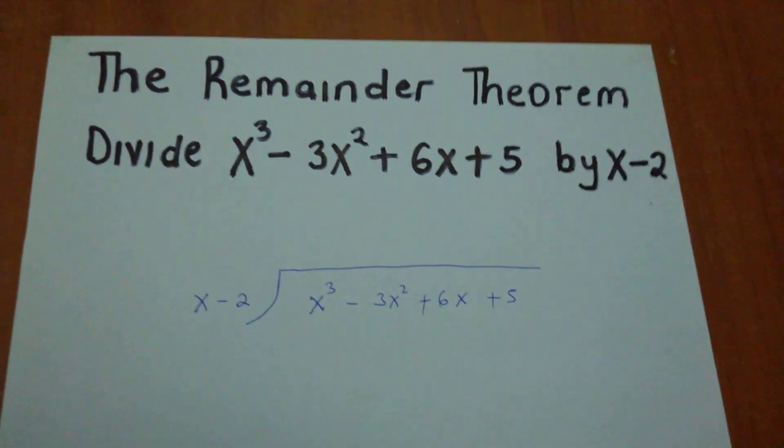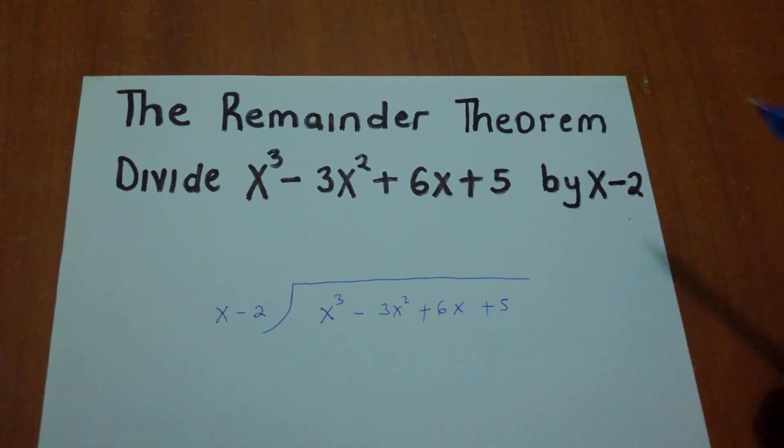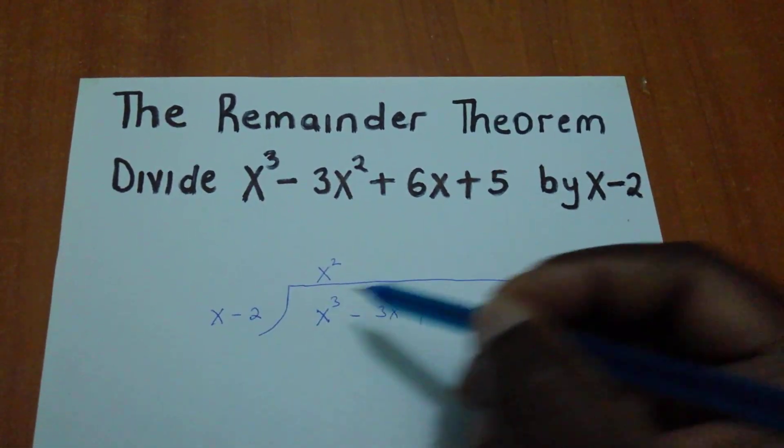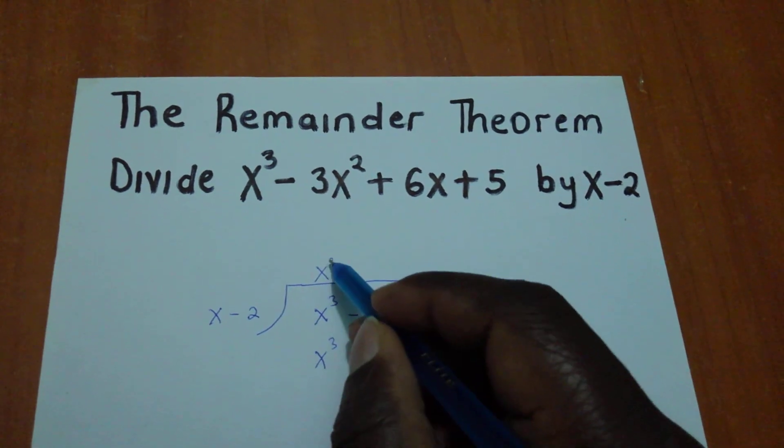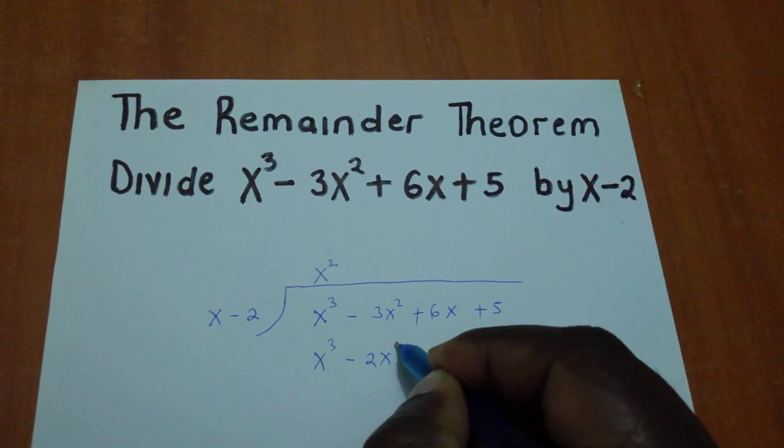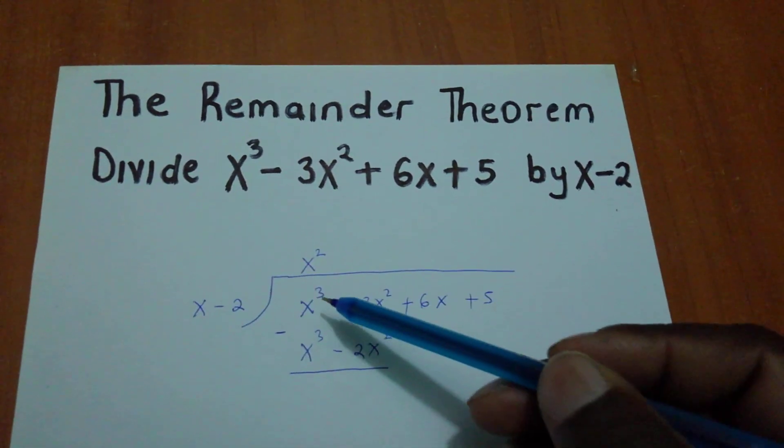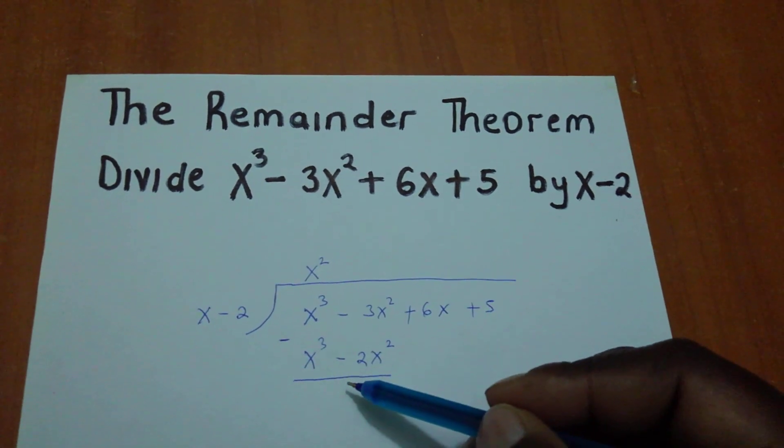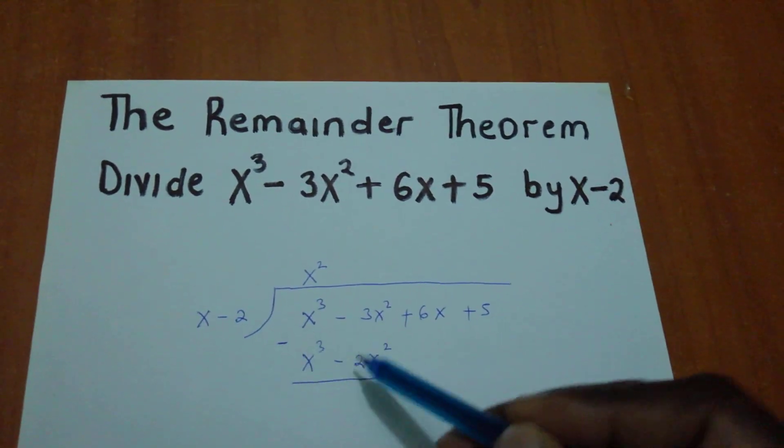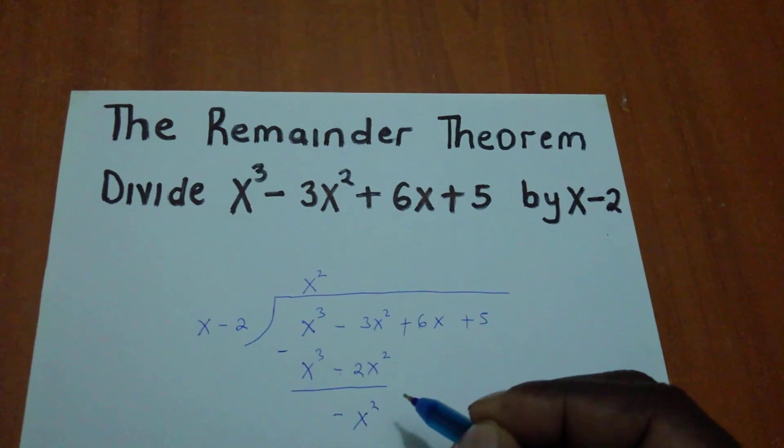Now we begin. We say x divided by x³ gives us x² positive. If we multiply this x² by the divisor, we get x³, and x² times -2 gives us -2x². When we subtract x³ - x³, we get zero. For -3x² - (-2x²), we get -x².